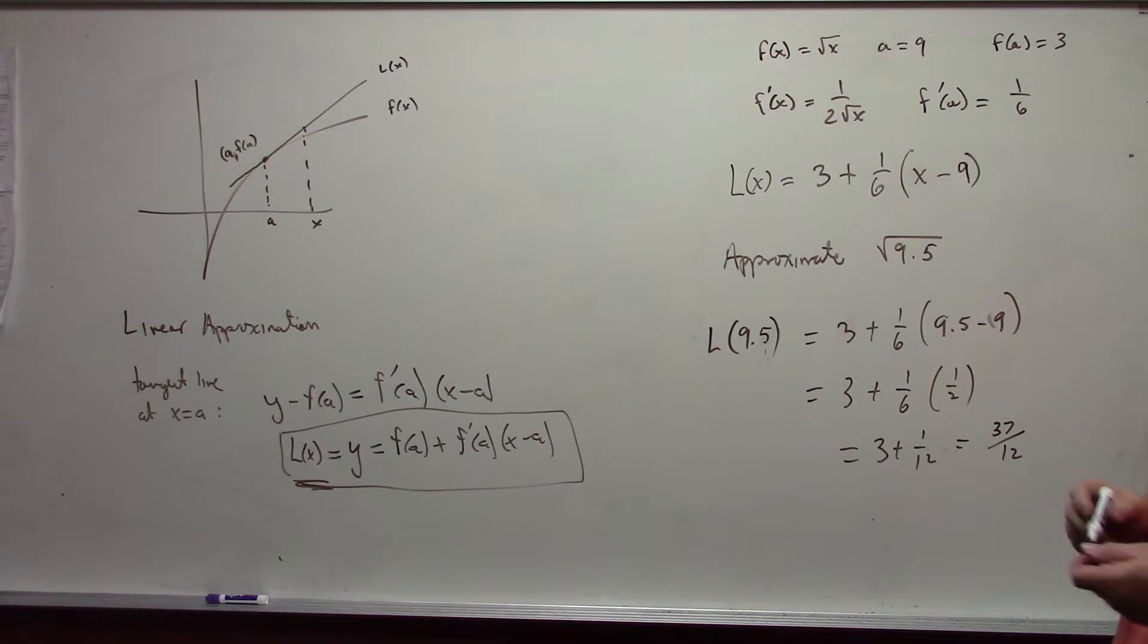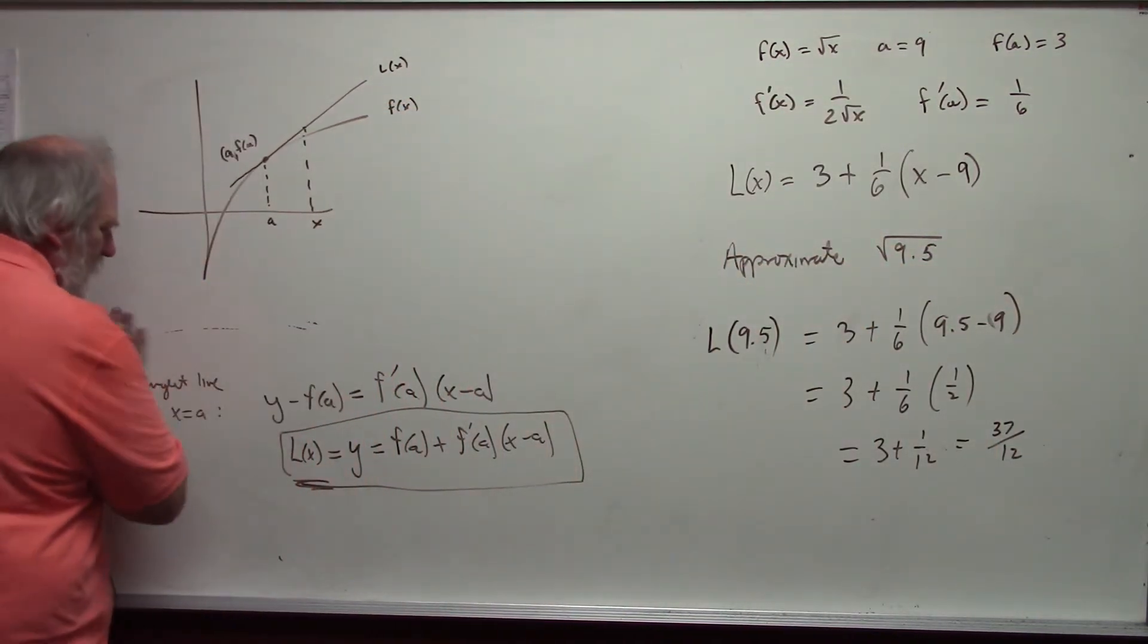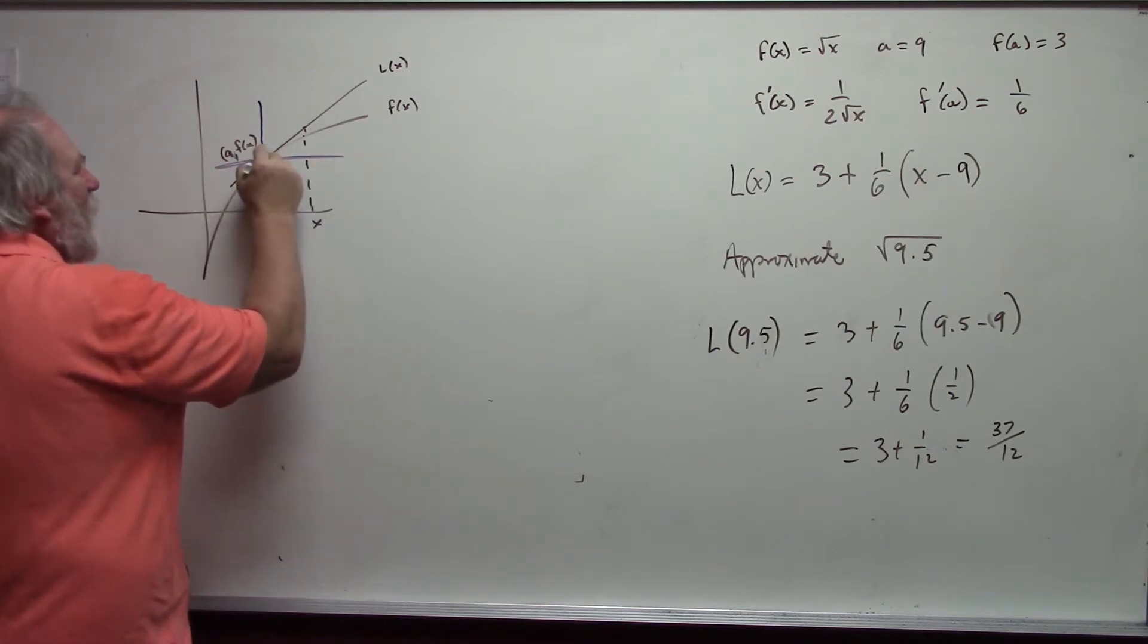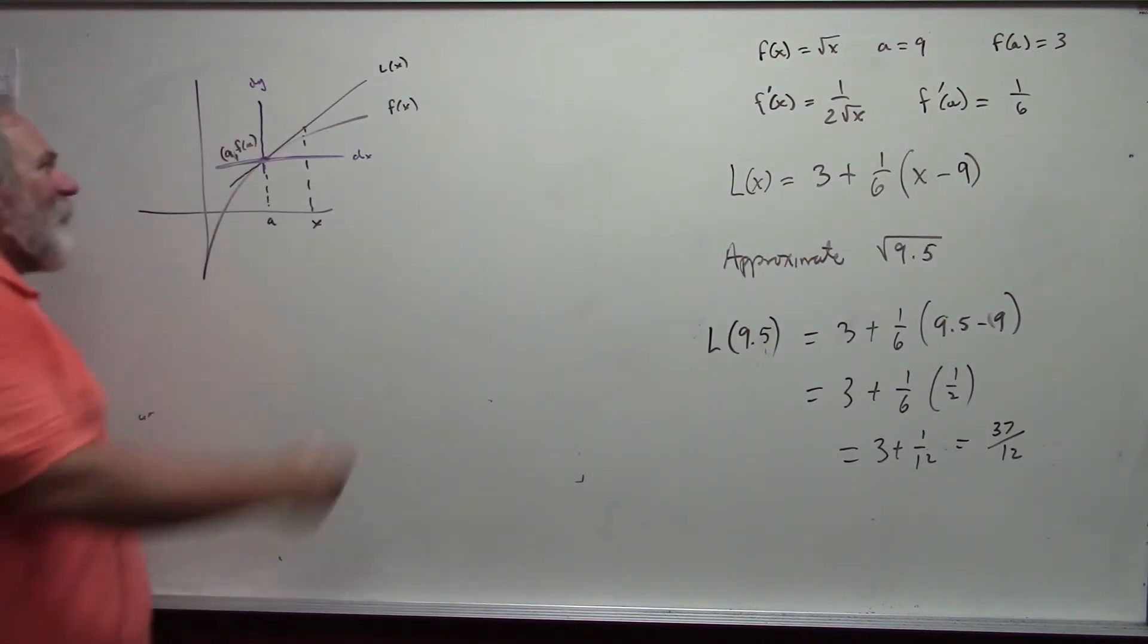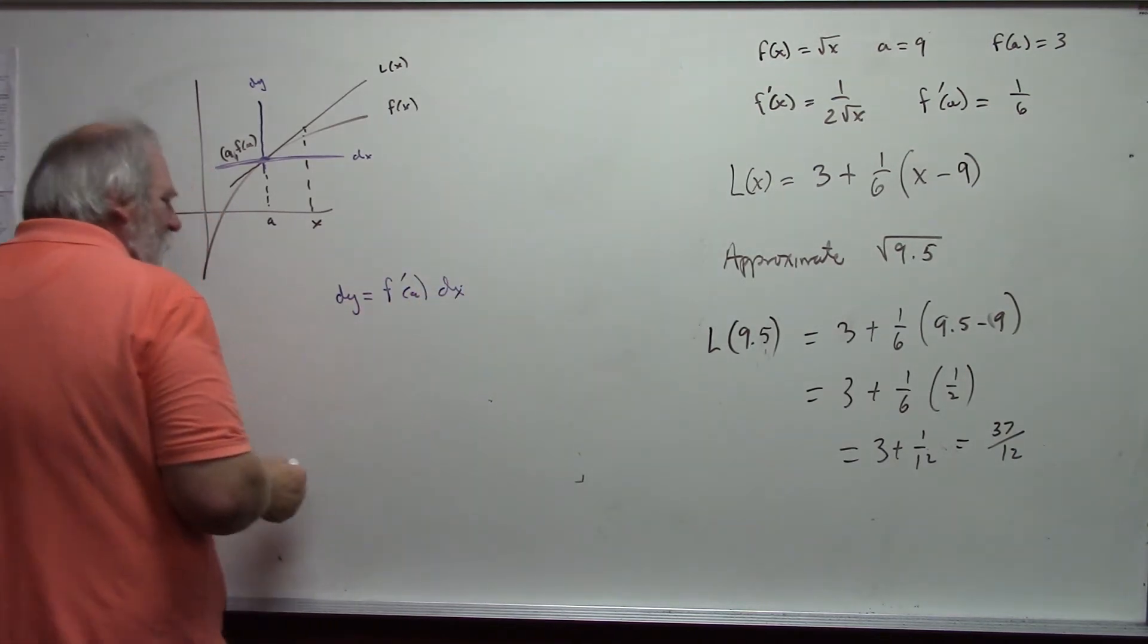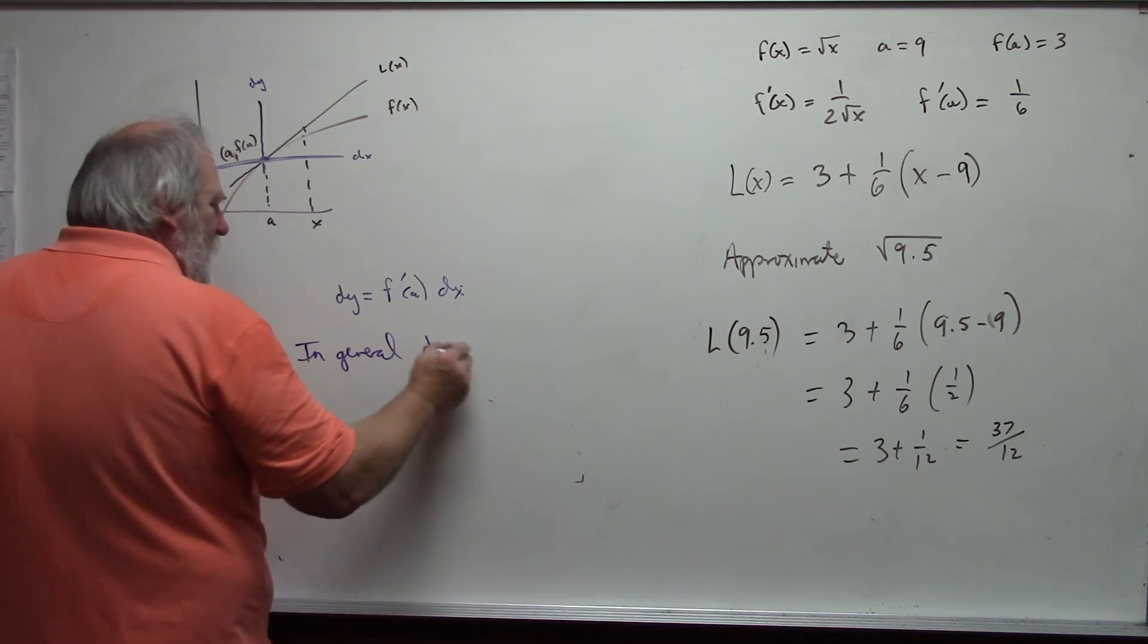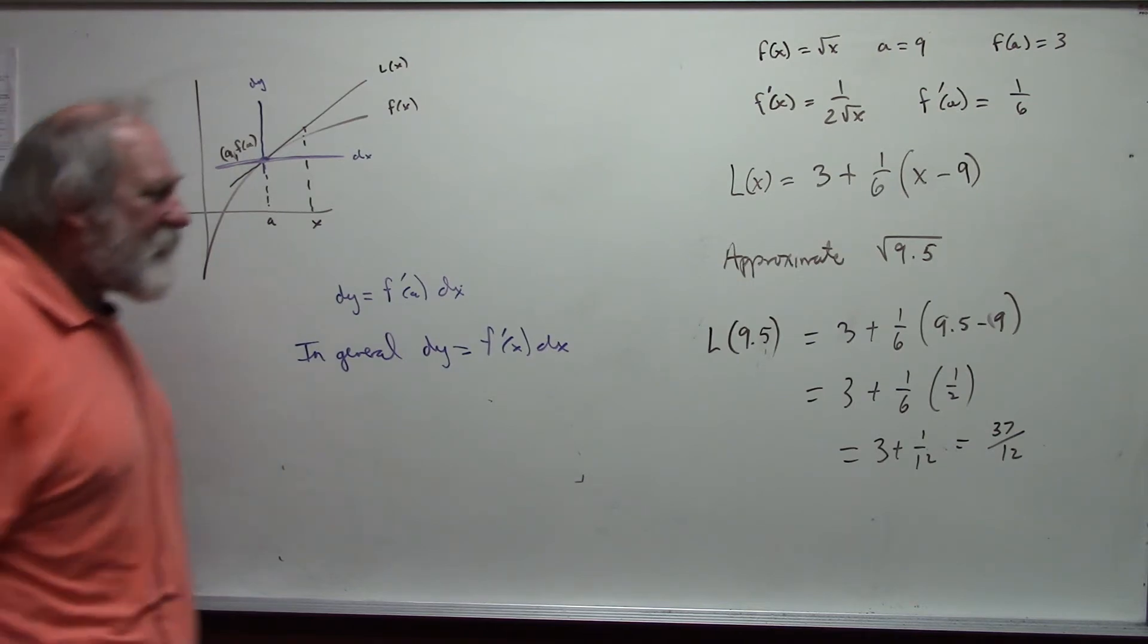And you get a decimal approximation, or we can say that's thirty-seven twelfths. Now we can also look at this in the form of differentials. And basically in differentials, what we do is we consider a new axis that goes through this point, and this is the dx axis and the dy axis. And so because of that, this tangent line then has the form dy is equal to f prime at a dx.